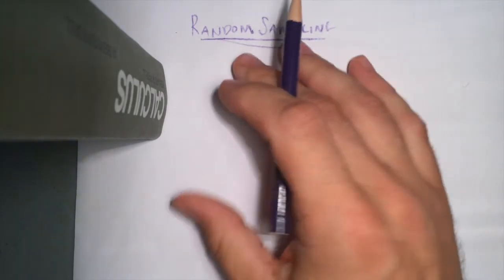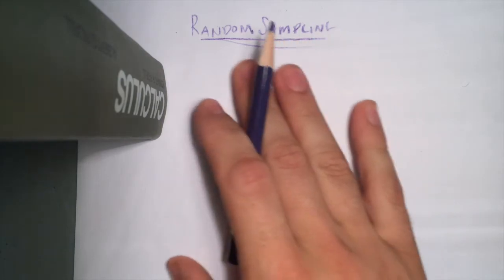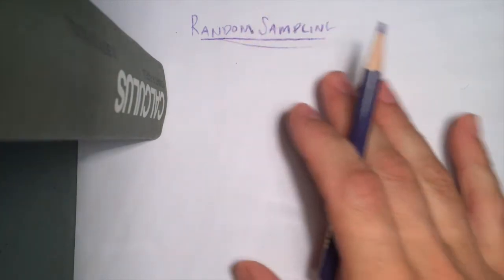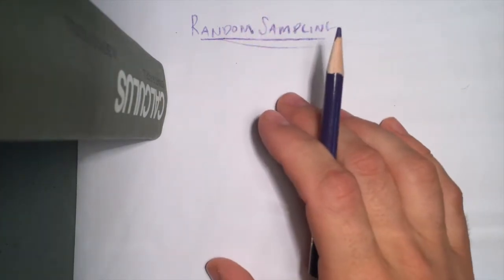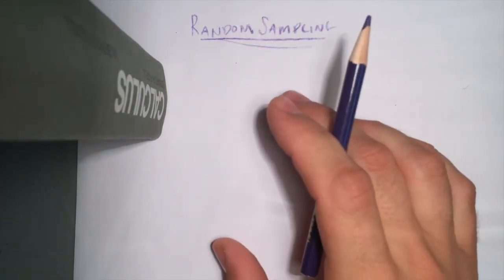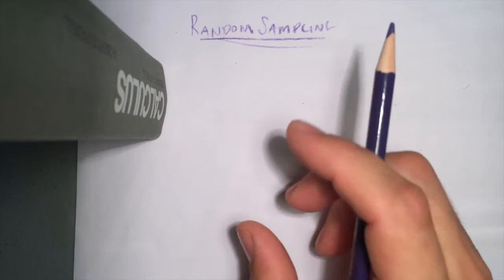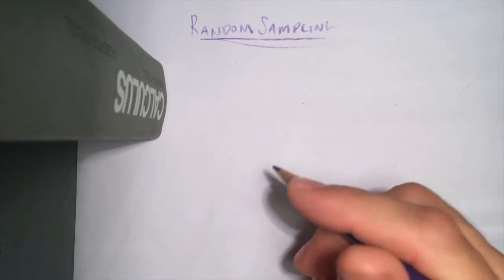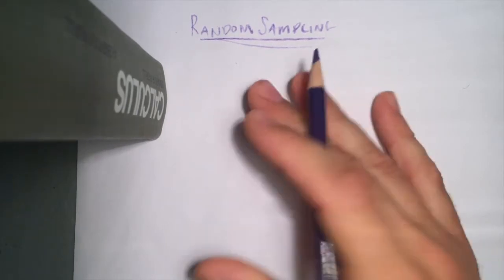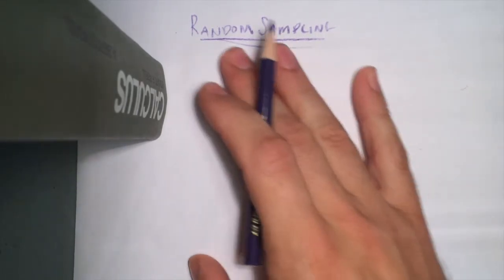So here are two quick videos that have to do with random sampling. First, we're going to look at the four random sampling techniques that we talked about in class, and then a second video that's going to talk about how we can use a random digit table to pick random samples.